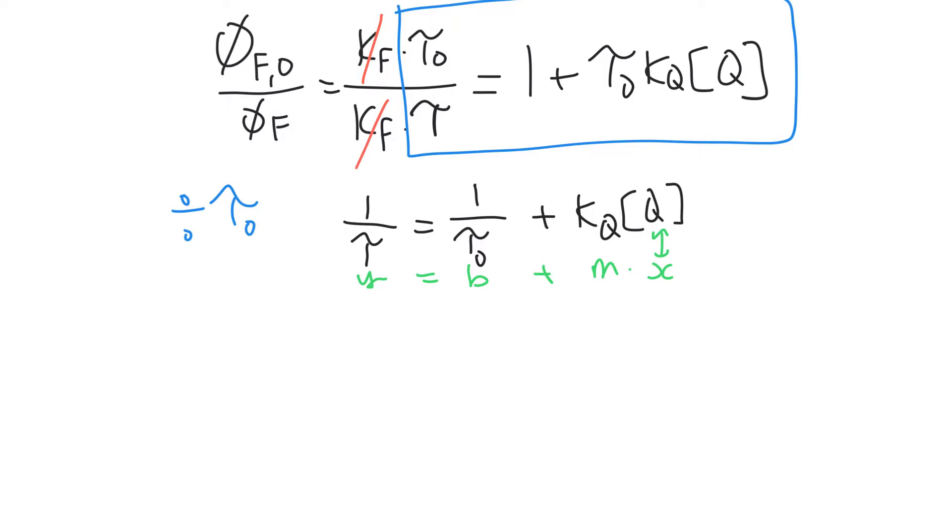What would it look like? We have 1 over that lifetime versus the quencher concentration. We would expect to see a straight line, and now directly the slope is equal to that quencher rate constant. This is a much easier way to get directly at the quencher rate constant.